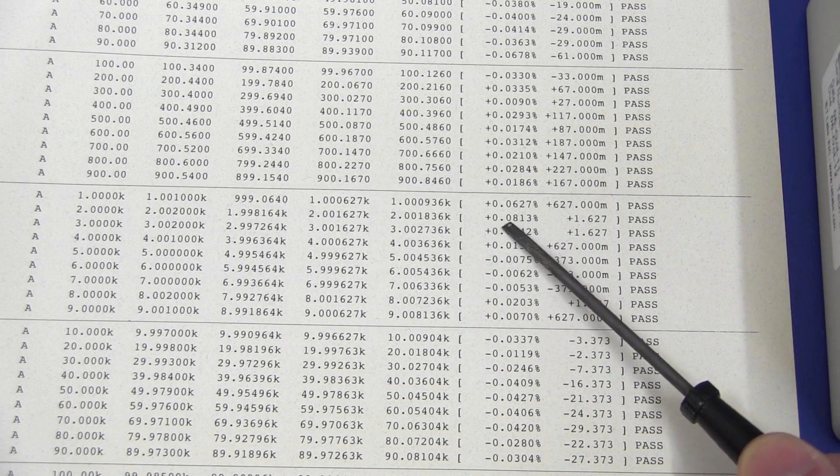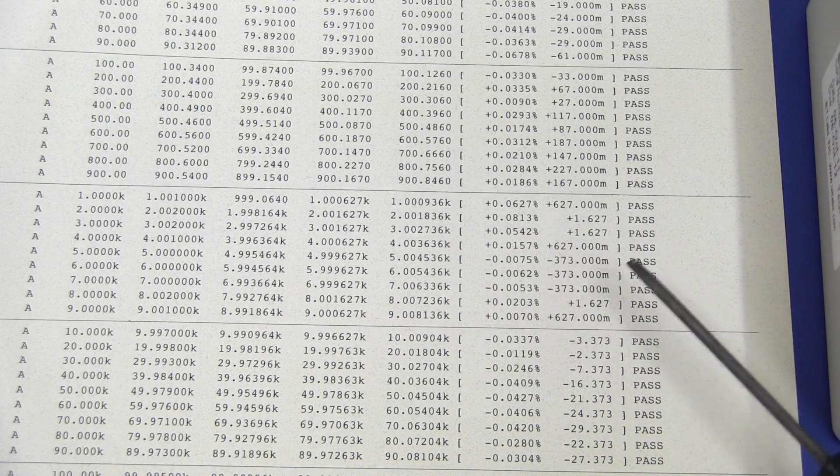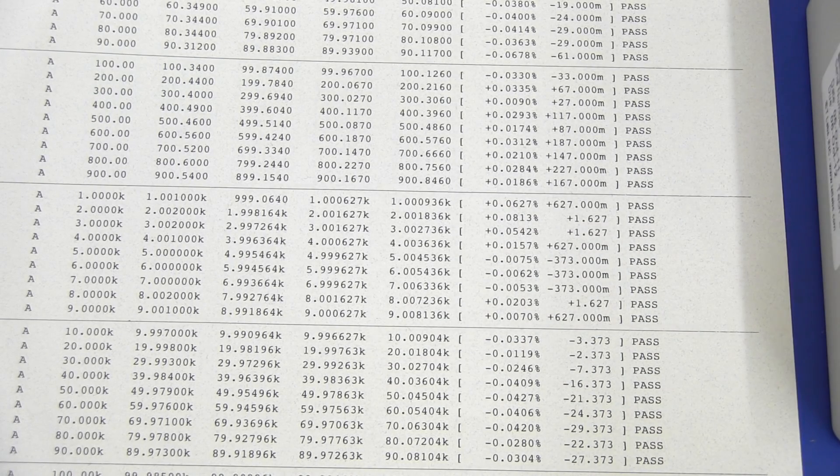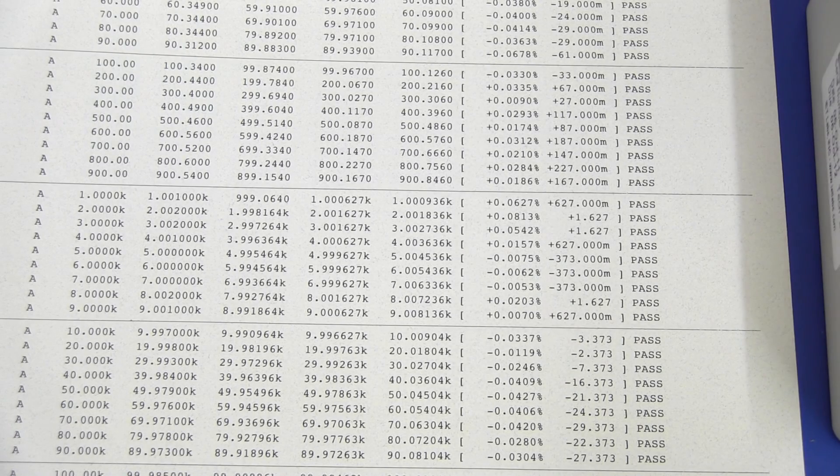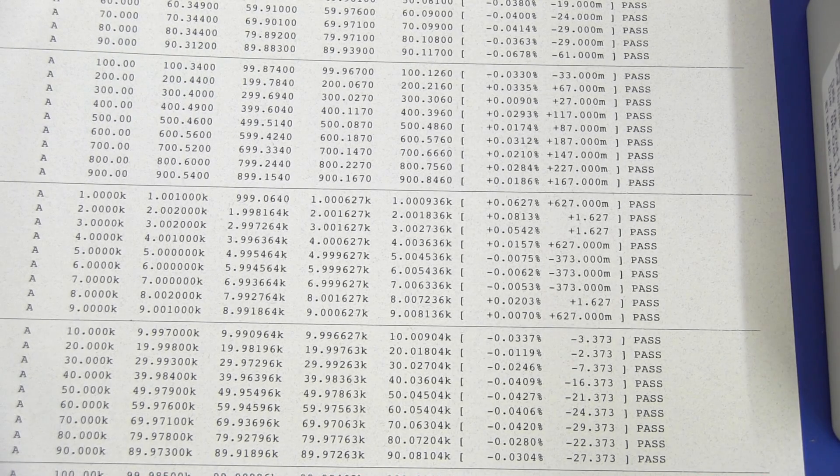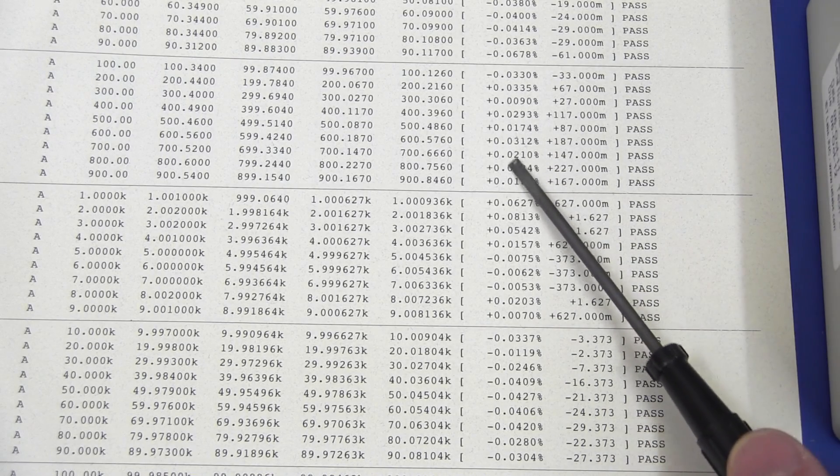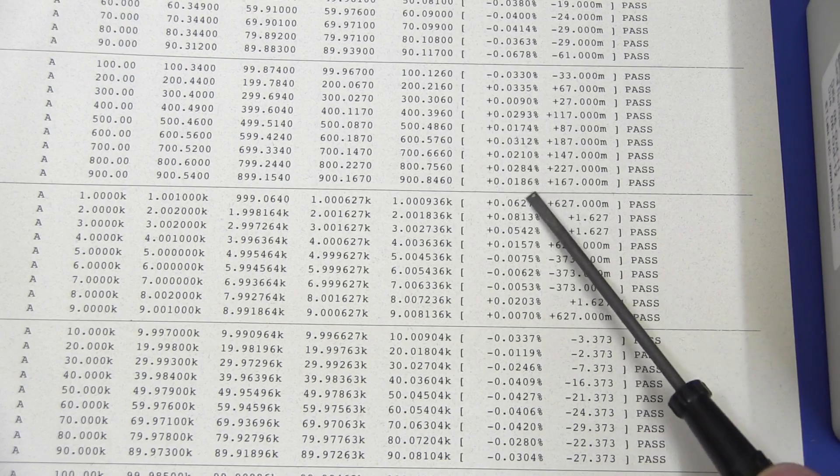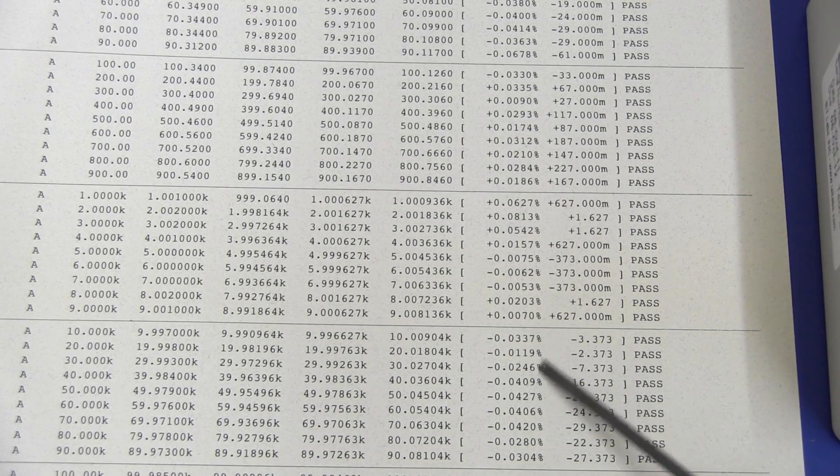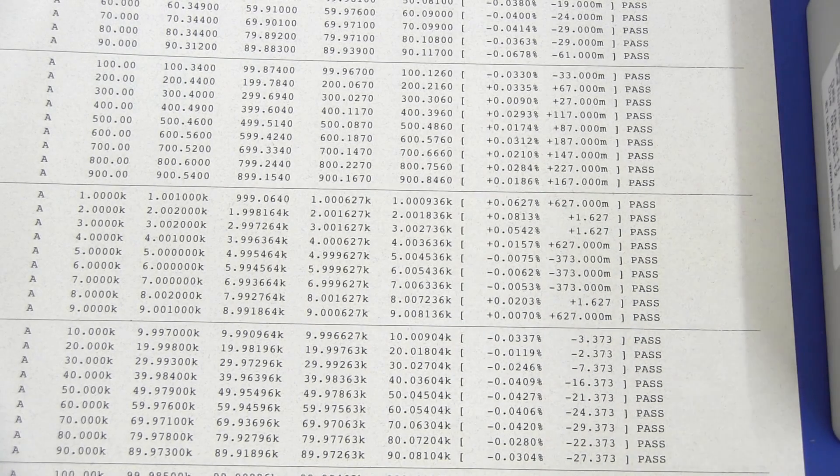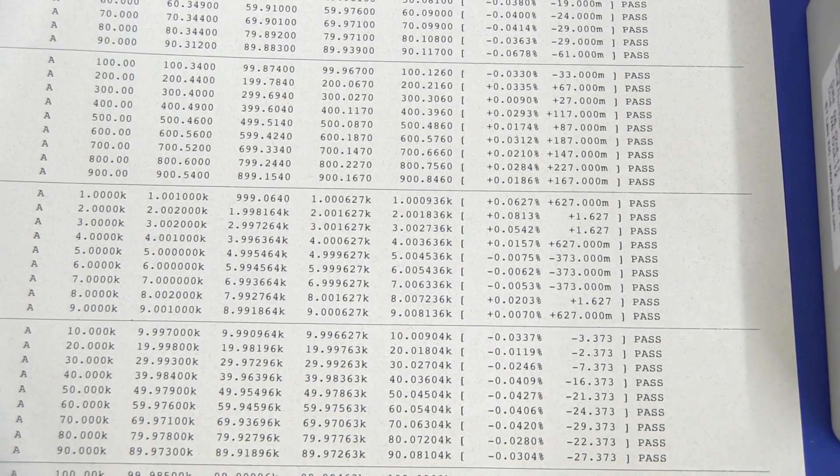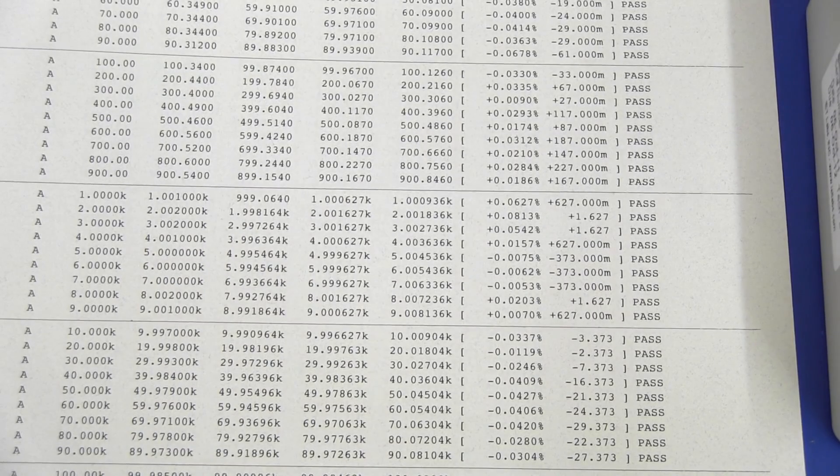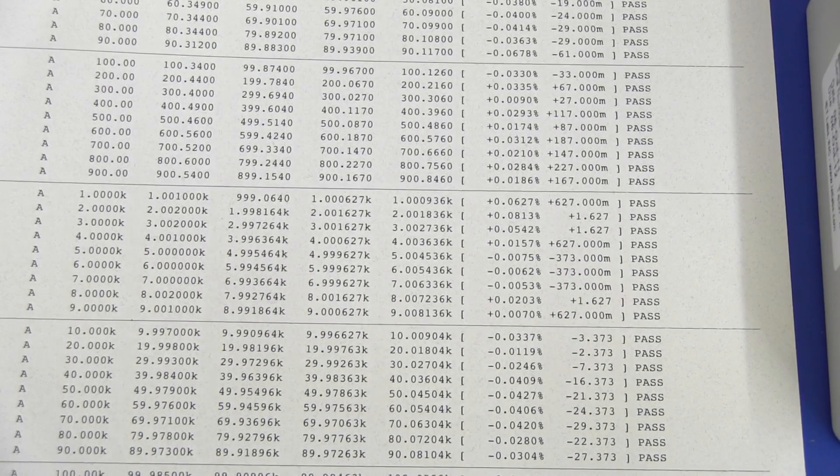But of course, they were all going to pass, they wouldn't sell it to you if it didn't meet its absolute spec of 0.1%. But as you can see, a good majority of these figures are around the 0.01, 0.02 range. So it's pretty good. But that's what you'd expect. You wouldn't expect them to actually, or a good majority of them, to be close to the 0.1% tolerance.